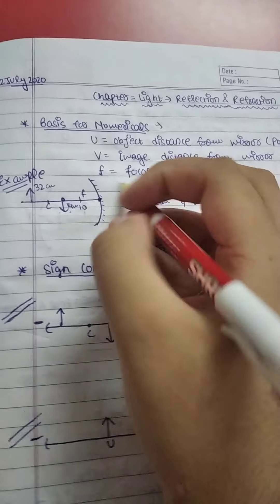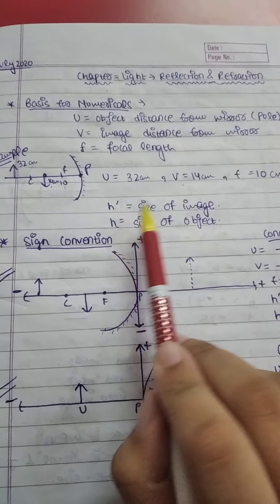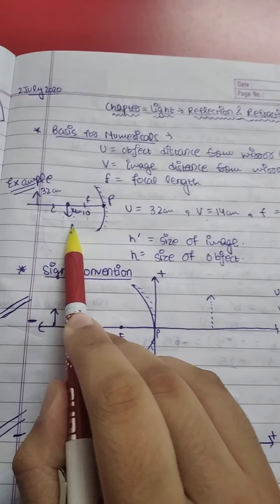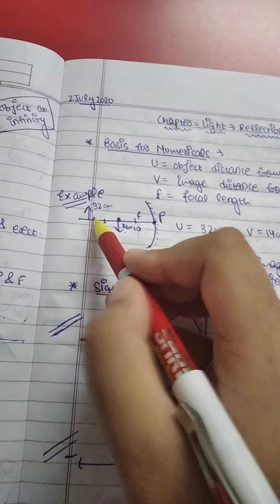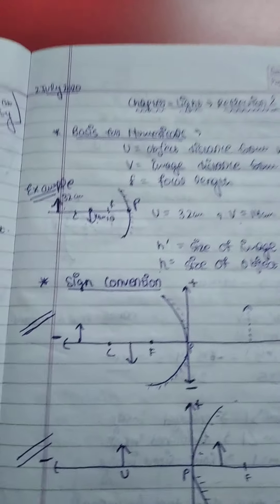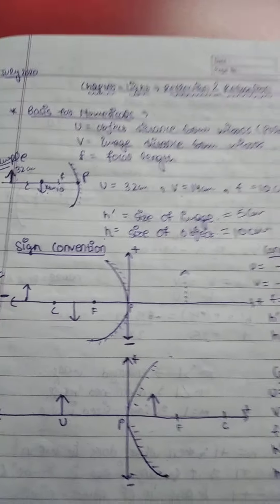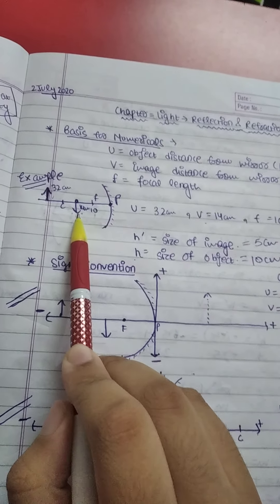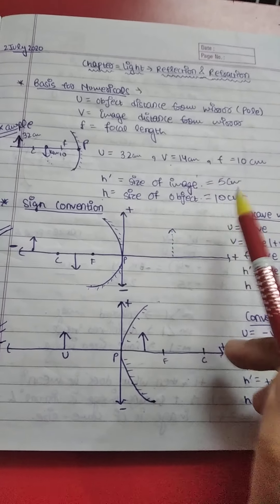Focal length f is the distance between the focus and the pole of the mirror — for example 10 cm. H' is the size of the image, for example 5 cm, and H is the size of the object, for example 10 cm. Looking at a ray diagram: if the image is beyond C it is smaller than the object, if both object and image are at C the sizes are equal.